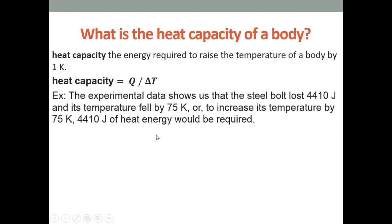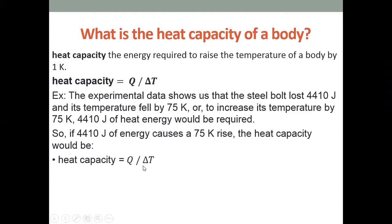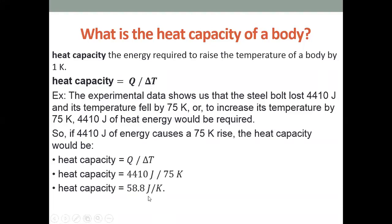Here is an example: experimental data shows that a steel ball lost 4,410 J and its temperature fell by 75 K. Heat capacity = 4,410 / 75 = 58.8 J/K. The unit of heat capacity is joule per kelvin (J/K), which is different from specific heat capacity whose unit is joule per kilogram kelvin (J/kg·K).